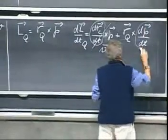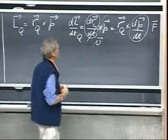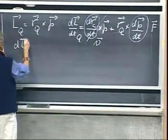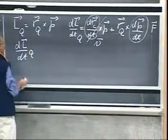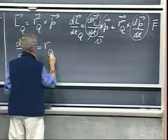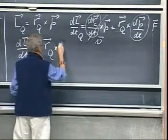dP dt, that is the force on the object. We've seen that before in 801. And so now we have that dL dt relative to a point Q equals the position vector R from that point cross F.